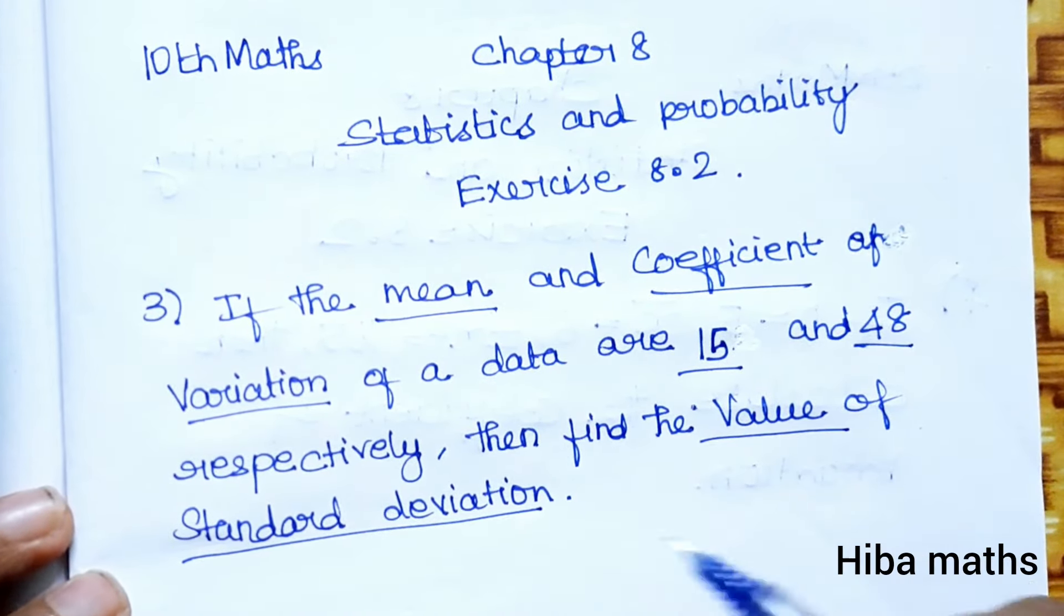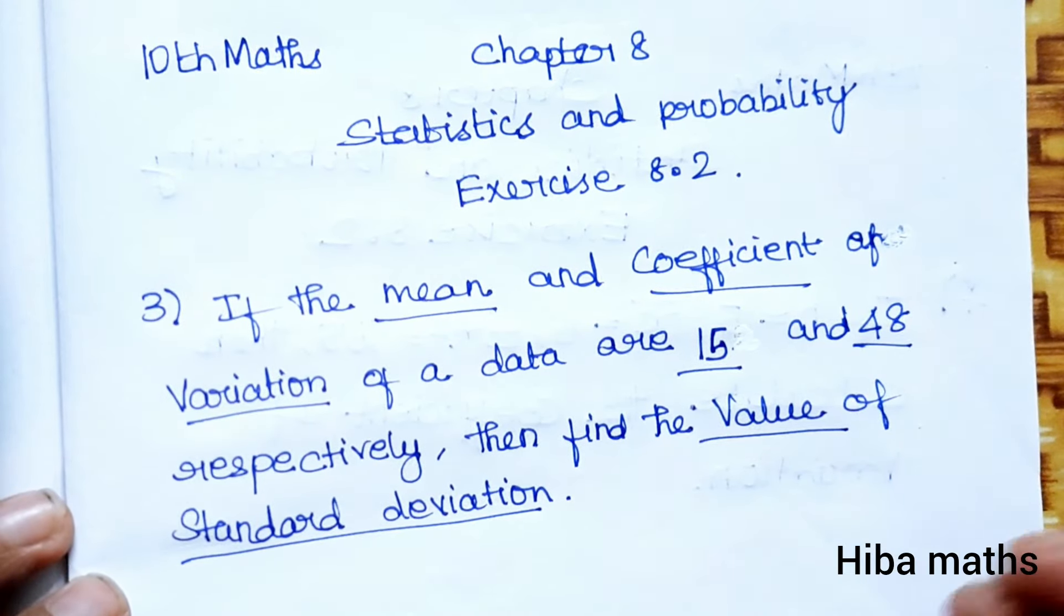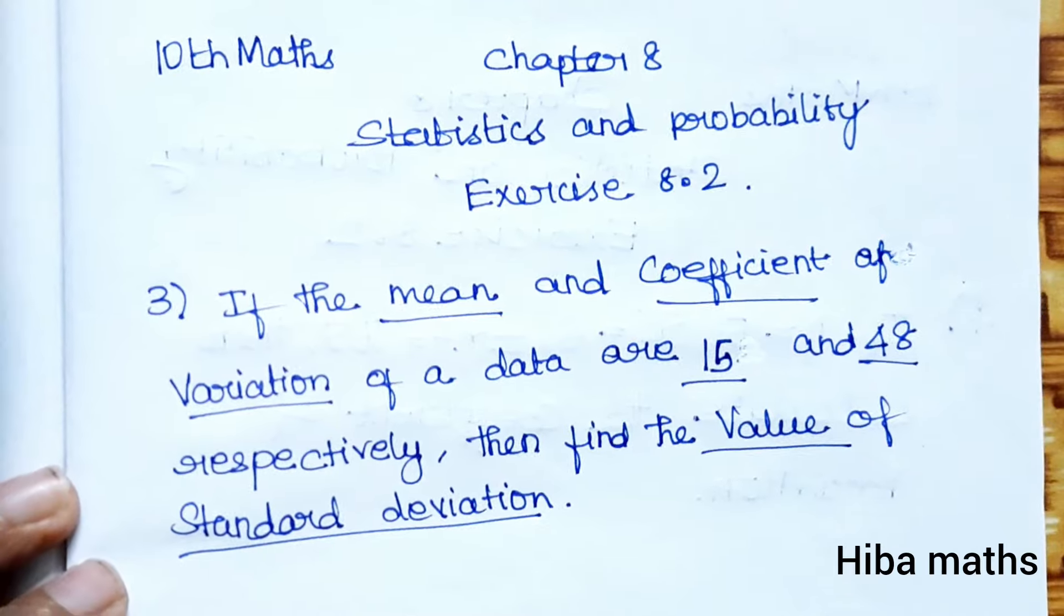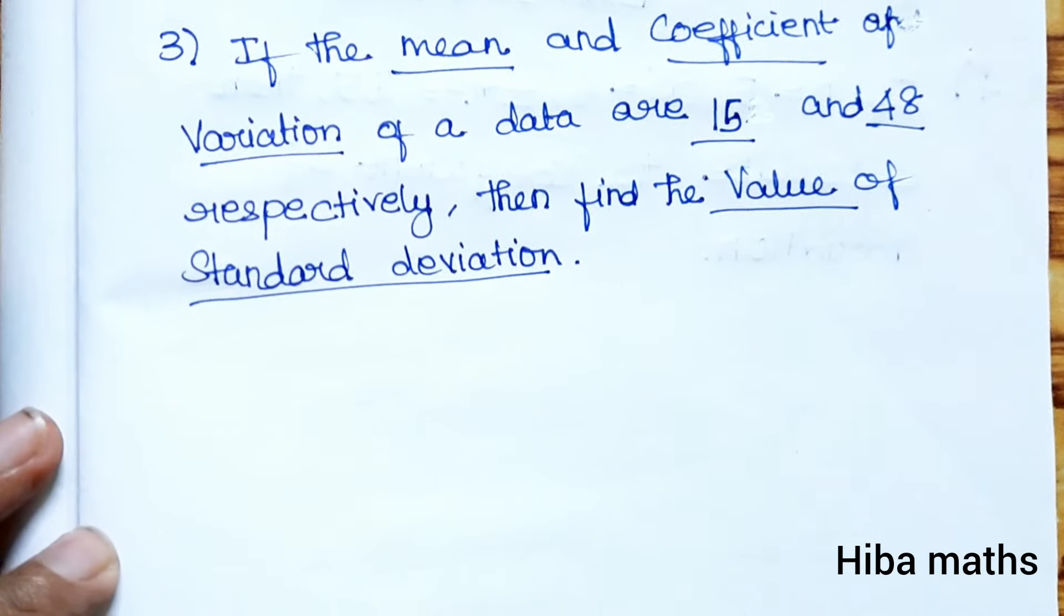So last time what did we do? Standard deviation was given to find coefficient. In this question, mean and coefficient are given to find standard deviation. So same formula, same method. Okay, solve it.